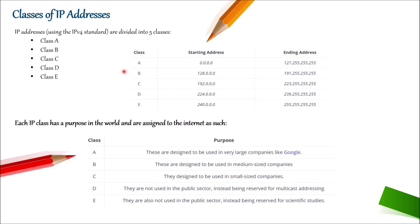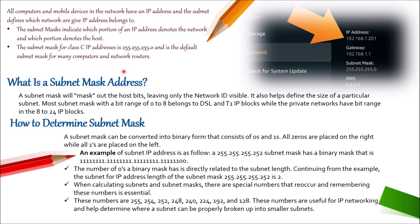Class D and Class E also have their own ranges. Class A is designed for use in very large companies. Class B is designed for medium-sized companies. Class C is designed for small-sized companies. Class D IP addresses are not used in the public sector — they are reserved for multicasting addresses. Class E is also not used in the public sector and is reserved for scientific studies. All computers and mobile devices in a network have an IP address, and the subnet defines which network a given IP address belongs to.